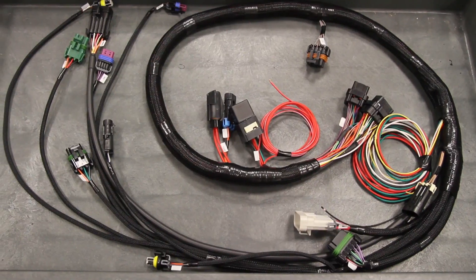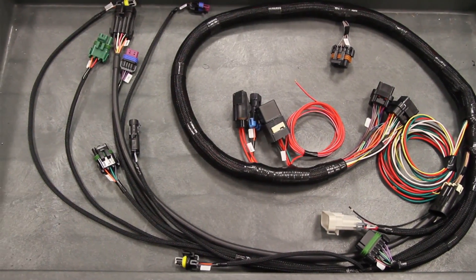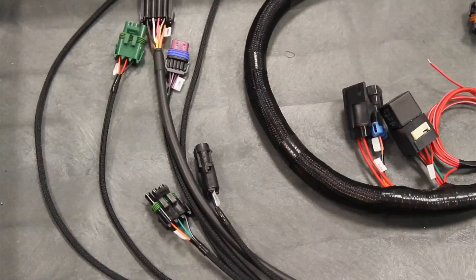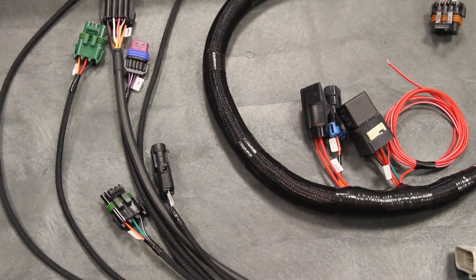This is the main wiring harness for Holley Avenger, HP, or Dominator system. This particular harness is for a four barrel TBI. All the harnesses are similar.